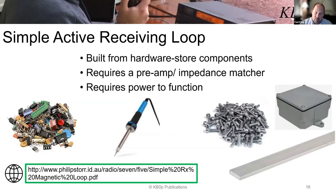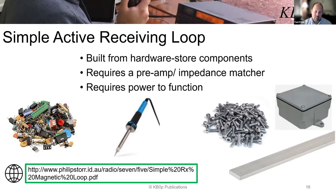A simple active receiving antenna also exists. The antenna we just talked about was passive — no preamp. But we can build an antenna with a preamp that boosts the receive signal. The active receiving antenna is one I built from hardware store components — Menards, Home Depot, wherever your favorite hardware store is. This type requires a preamp, an amplifier, and an impedance matcher, so you'll be digging into your parts bin for transistors, capacitors, and resistors. Because it's an active preamp, it needs power to function. The plans are all online.